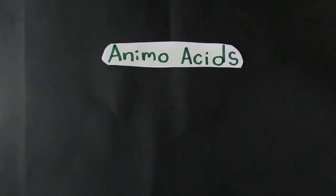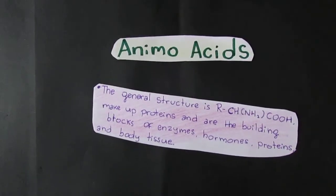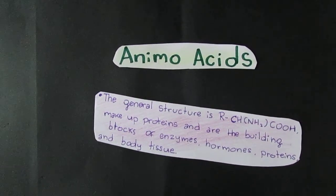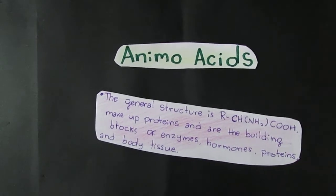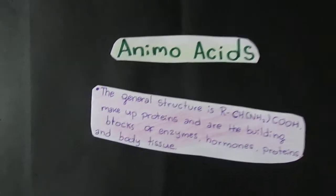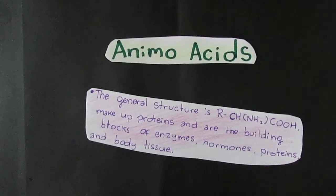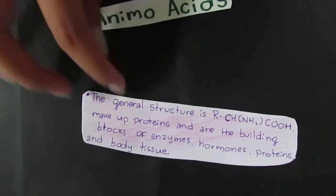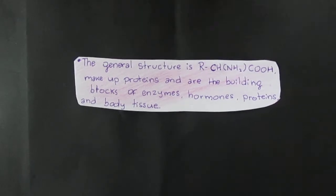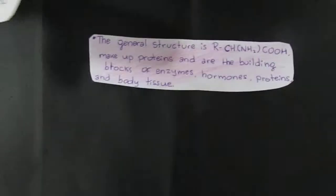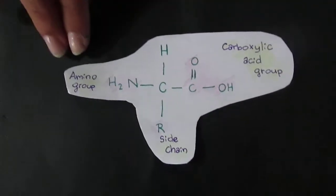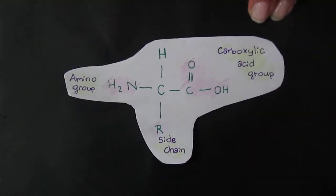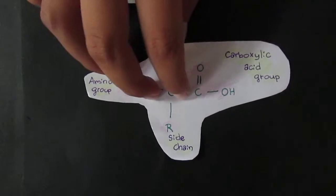The general structure of amino acids is RCHNH2COOH. They make up proteins and are the building blocks of enzymes, hormones, proteins, and body tissue. So now here we have how the amino acids look like. You see here is the amino group, this one is a carboxylic group, and this is the side chain.